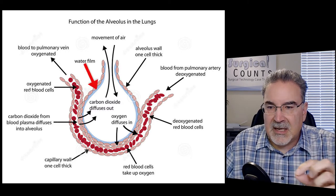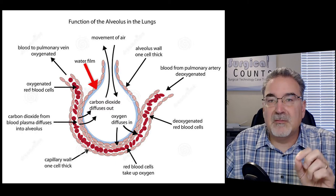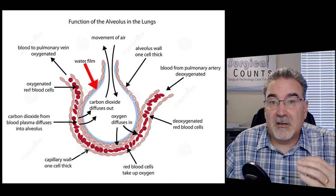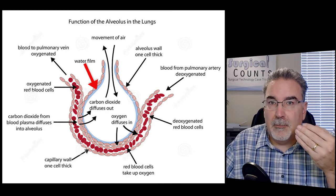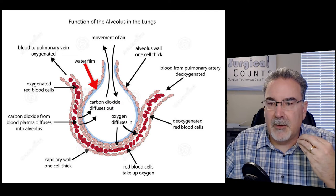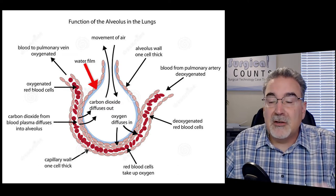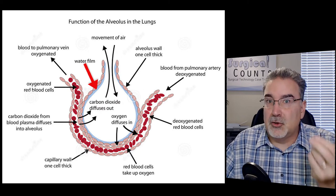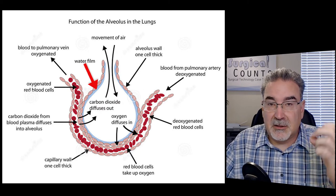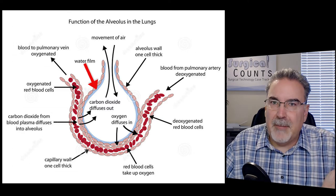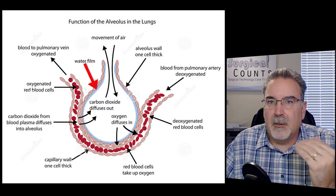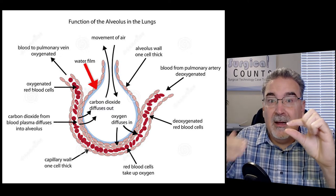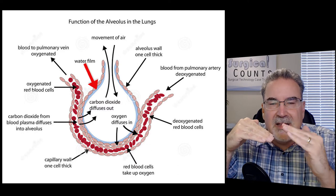Along the inside surface of the alveolus is a thin water film layer that keeps those cells moisturized. That's why our nose is so important — it humidifies the air we breathe in. If we breathe in dry air, that water film is very thin, and if it dried out, the cells would dry out, crack, and start to bleed. So we need to keep this water film around them to keep those cells healthy. But it has to be a very thin water film, because we want those cells as close to the air as possible.